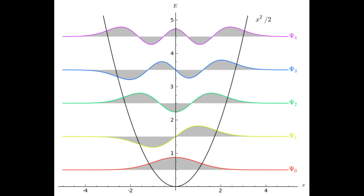Today I'd like to share a simple visualization tool I developed for the quantum harmonic oscillator in Python. The quantum oscillator is of particular interest to physicists because of its shared similarity to the classical oscillator. Both share a quadratic potential that varies as the square of the distance from a stable equilibrium point.